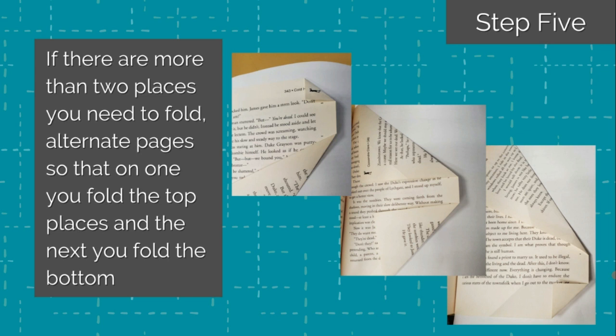Some letters will have parts of the letter that have more than two places that you want to fold. In instances like this, you will want to alternate pages. So for parts of the letter that require four different folds, on one page fold to the top two fold points, and then on the next fold to the bottom two fold points. Then on the third, go back to the top two fold points.